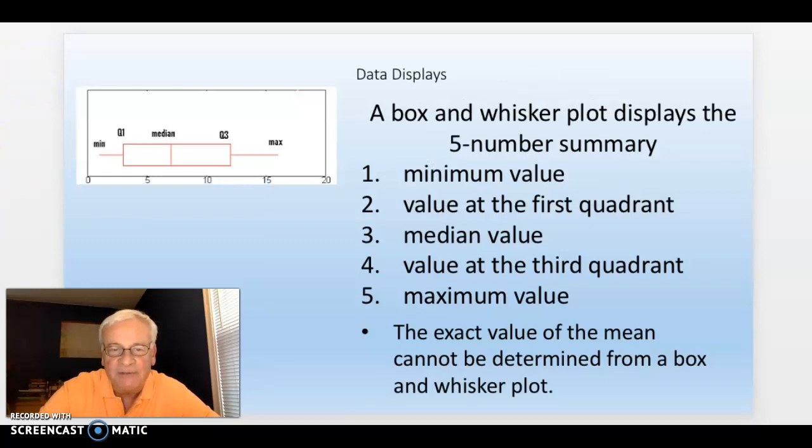It displays a five-number summary: five different numbers about that set of data. The minimum, the value at the first quartile, the median value (which is the value in the middle when you put them in order), the third quartile (which is the middle of the upper half), and then the maximum value.